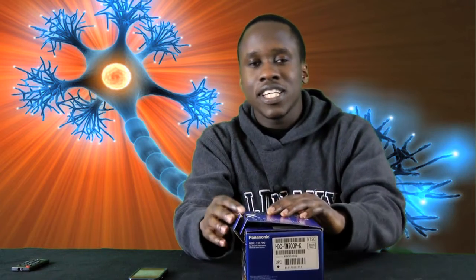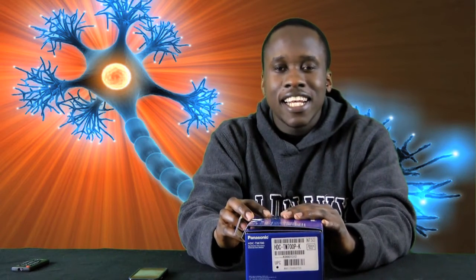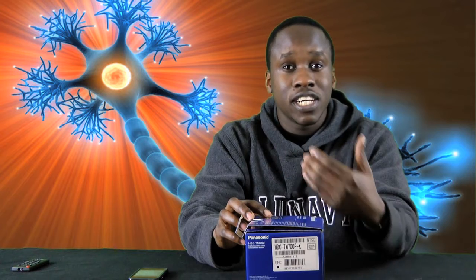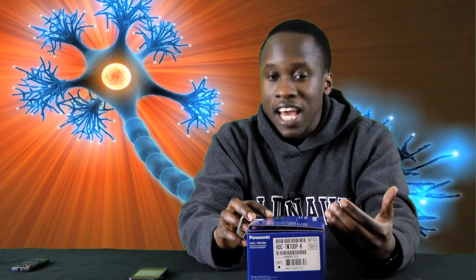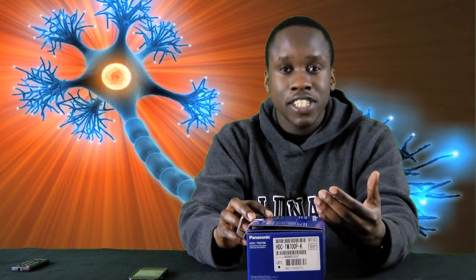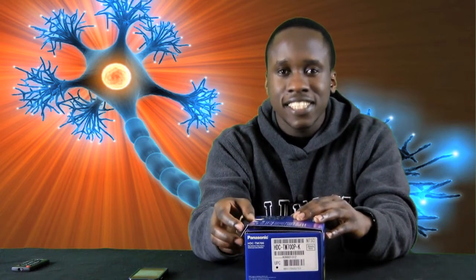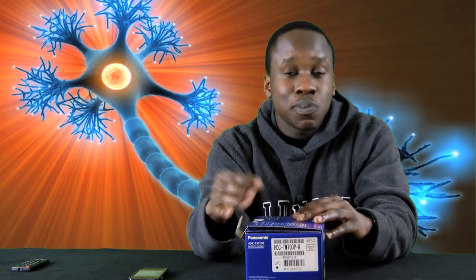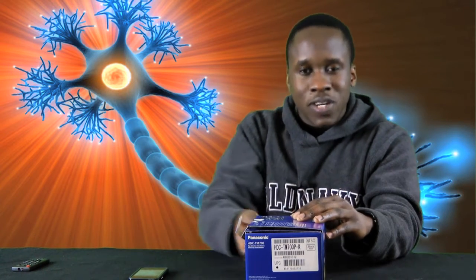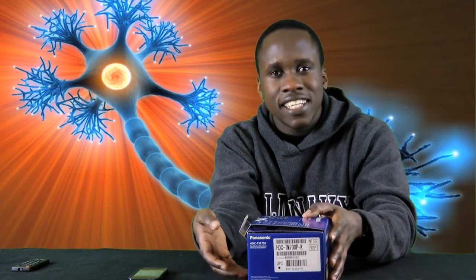So we have a stimulus that comes along and the stimulus causes the membrane potential to become more positive and it reaches the threshold. Now the cool thing about this gate, the activation gate, is that it's positively charged. Now imagine you have a bunch of positive charge inside here and let's say it's inside the cell.